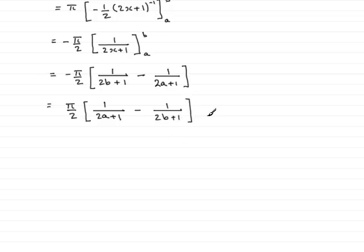Now to simplify this further, what I would want to do is put this over the lowest common multiple of these two factors underneath here, (2a plus 1) and (2b plus 1). So we'll have the pi over 2, now we'll put it over the lowest common multiple of those two, which would be (2a plus 1) multiplied by (2b plus 1).